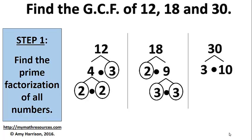3 times 10 equals 30. 3 is prime. 2 times 5 equals 10, and both of those are prime.